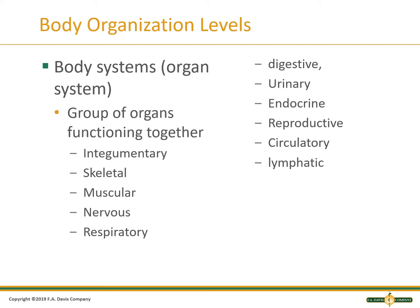Body systems are groups of organs functioning together for a common purpose. The major body systems are the integumentary, skeletal, muscular, nervous, respiratory, digestive, urinary, endocrine, reproductive, circulatory, and lymphatic.